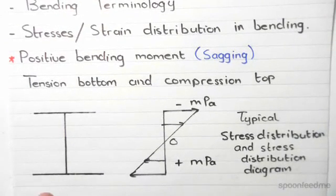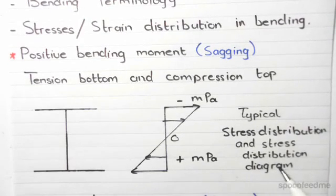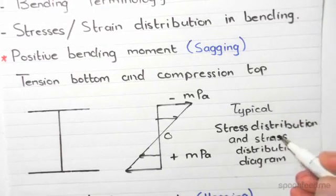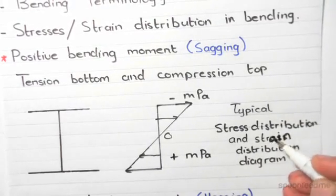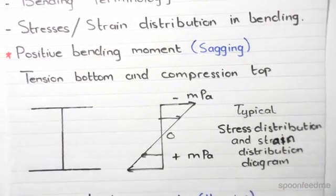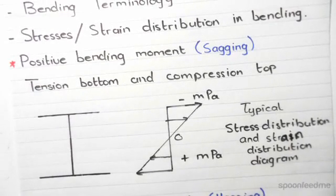So if we have considered this slender I-section over here as you can see, a typical stress distribution and strain distribution diagram. So this should be strain, excuse me. This is a typical stress and strain distribution diagram.